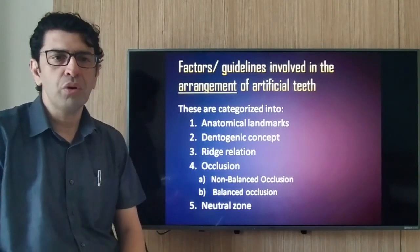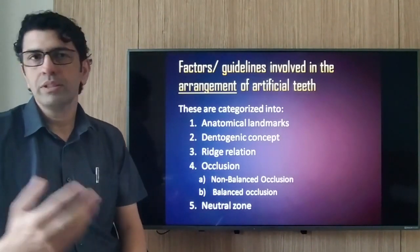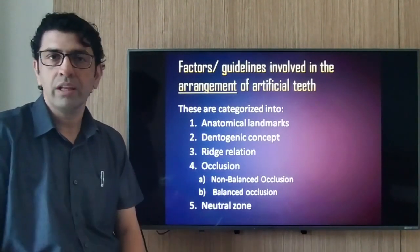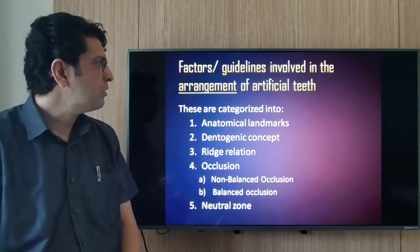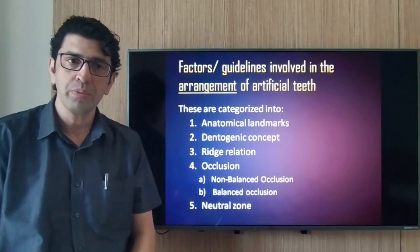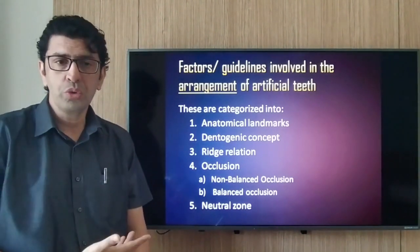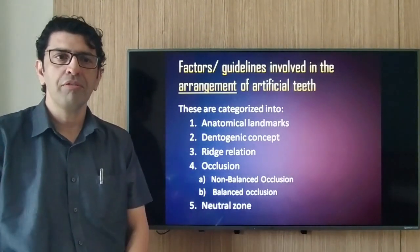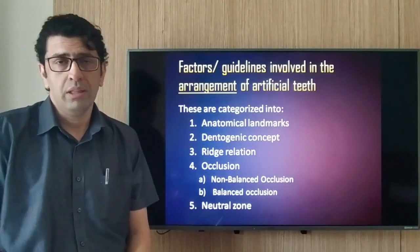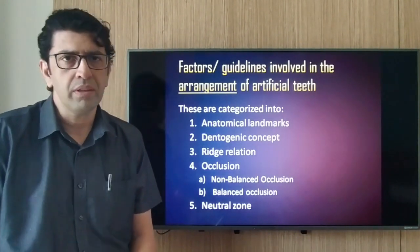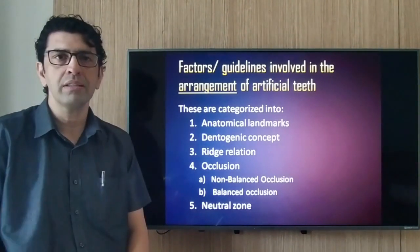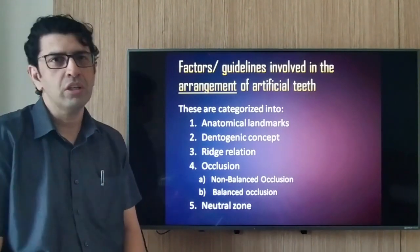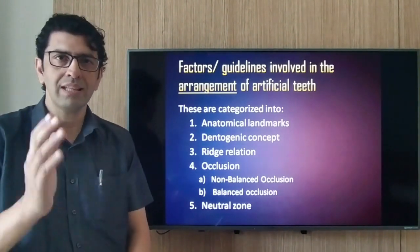The factors or guidelines involved in the arrangement of artificial teeth include: anatomic landmarks, dentogenic concepts, ridge relation, occlusion (balanced or non-balanced), and the neutral zone. These five factors predominantly guide how we arrange artificial teeth in a sensible fashion. Different books may categorize these differently, but these are the main guiding factors.